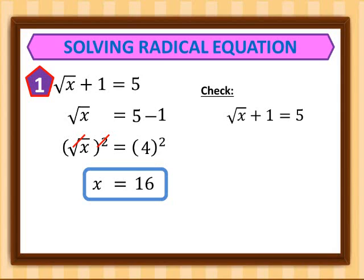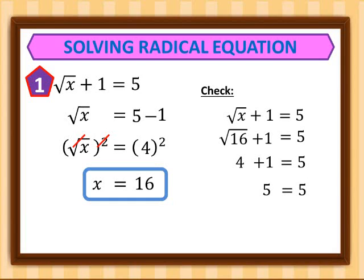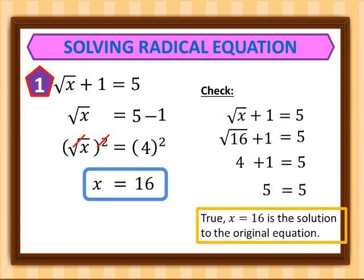Square root of x plus 1 equals 5. We substitute 16 for x: square root of 16 plus 1 equals 5. The square root of 16 is 4, and 4 plus 1 equals 5. Since this is true, x equals 16 is the solution to our original equation.